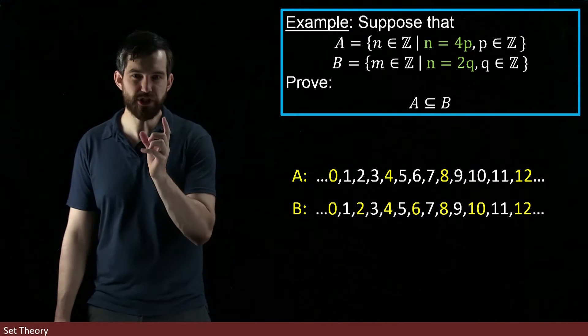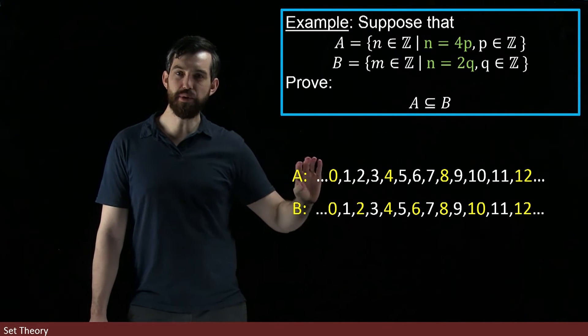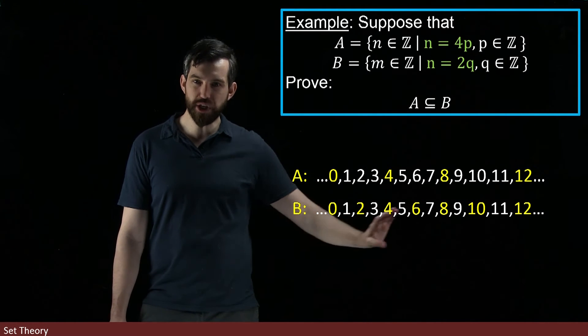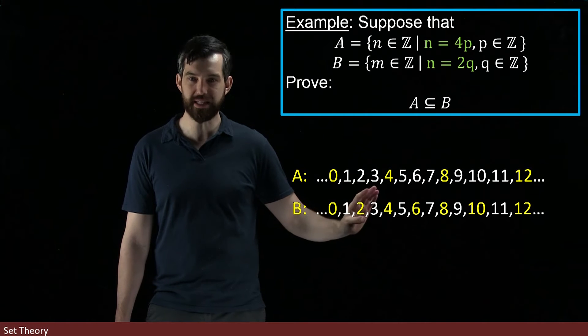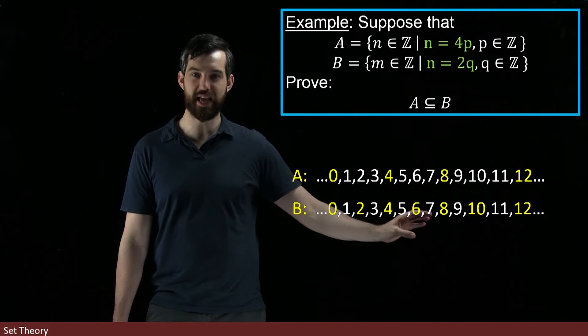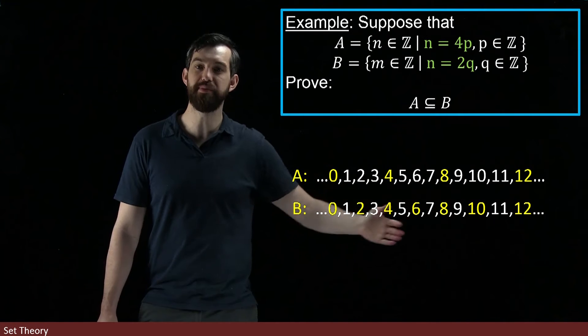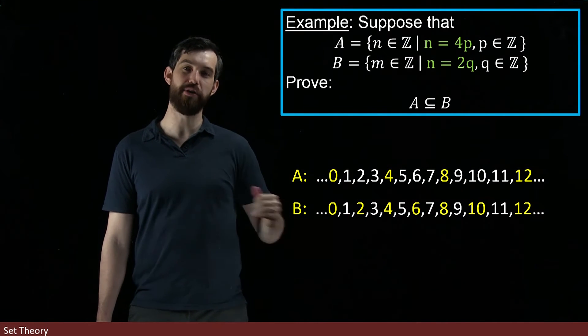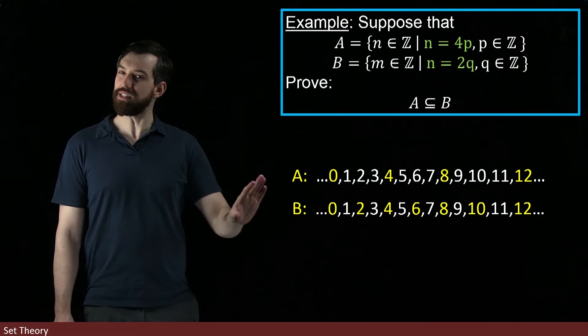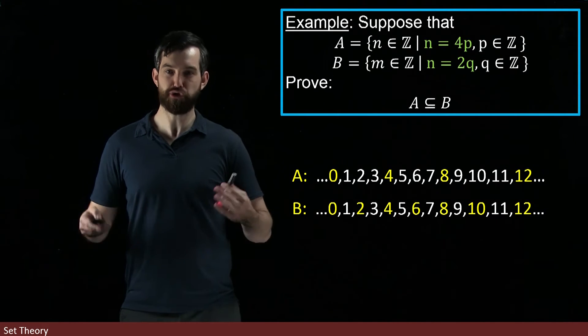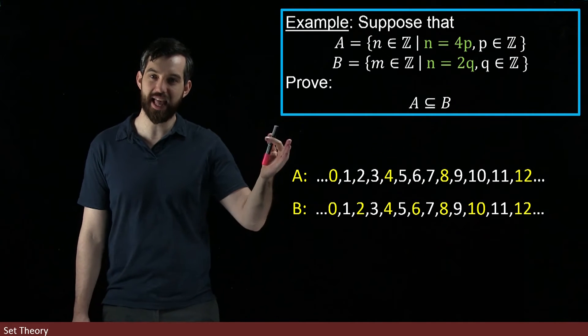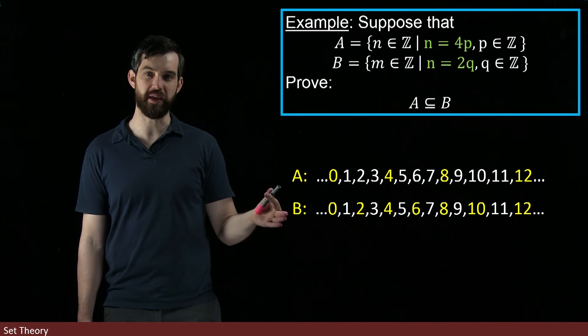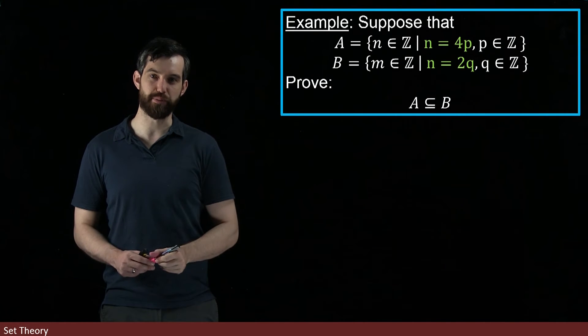So then the observation that I want to make here is that everything that was highlighted in the A set—the 0, the 4, the 8, and the 12—is also highlighted down here in the B set, namely the 0, the 2, the 4, the 6, the 8, the 10, the 12. There's more of them down here in B, but everything that was highlighted in A is again highlighted down in B. So while this is not a proof, it is still illustrating the idea that yes, I think that A is a subset of B because everything that's highlighted in A is highlighted in B. So now let's go and try to actually formally prove this.